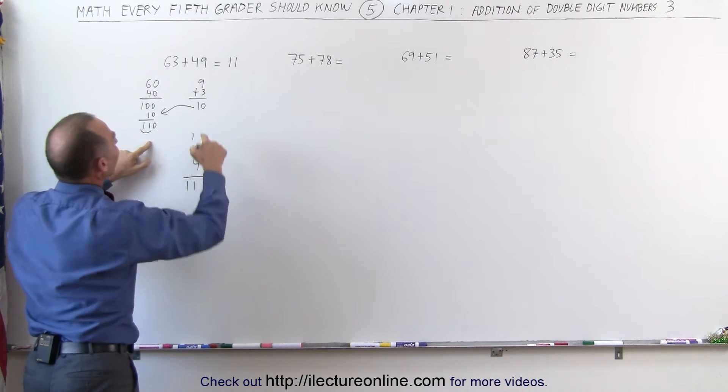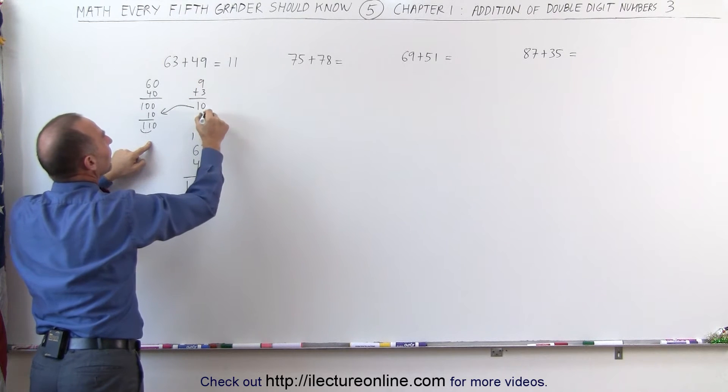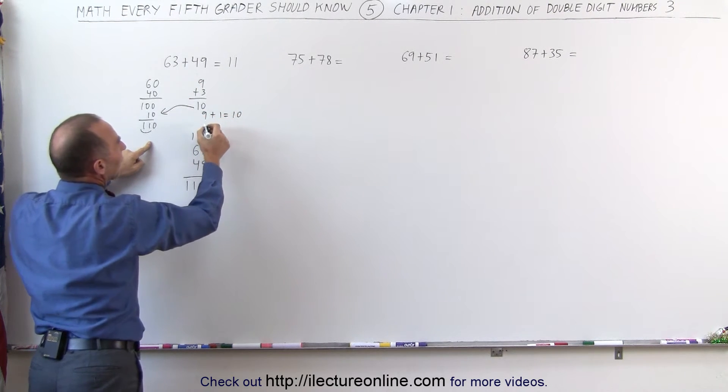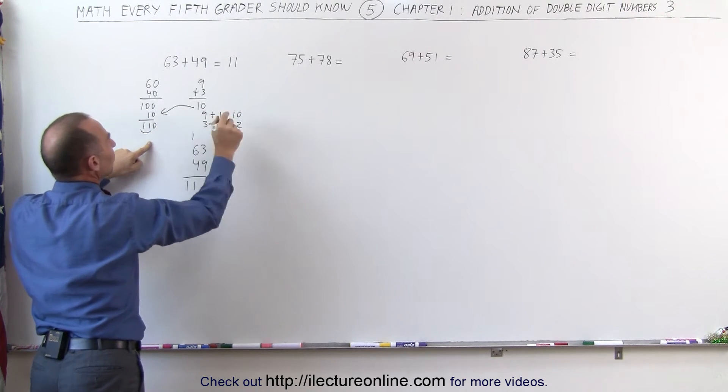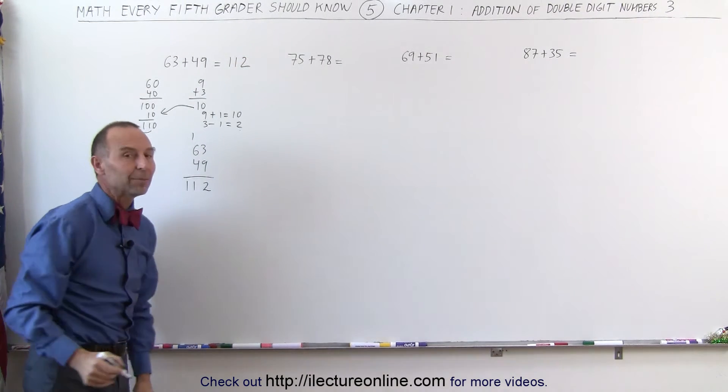Oh, it looks like a little smiley face. And then I subtract 1 from the 3 to give it to the 9. 9 plus 1 gives me 10. And 3 minus 1 gives me 2. Since I added a 10 here, that's gone. I need to add another 2. That becomes 112, which is the same number we got there.